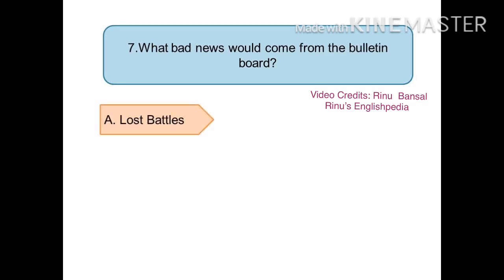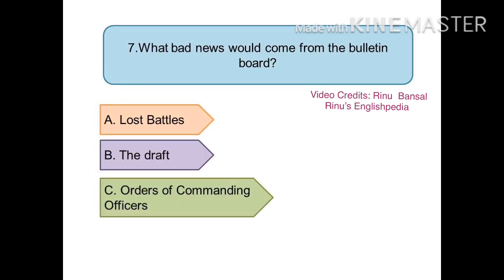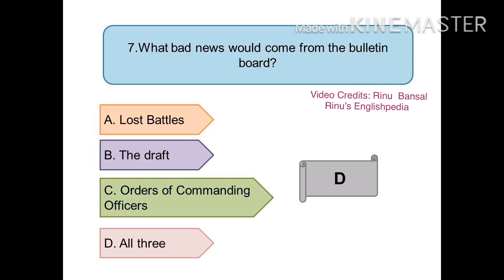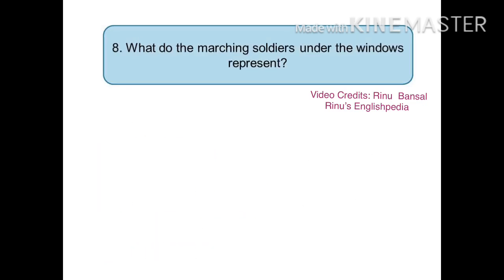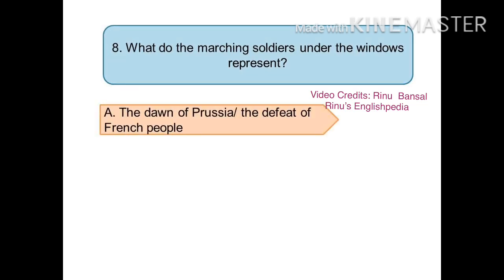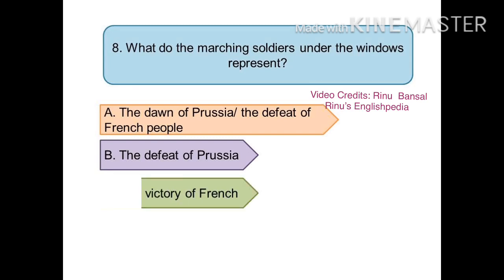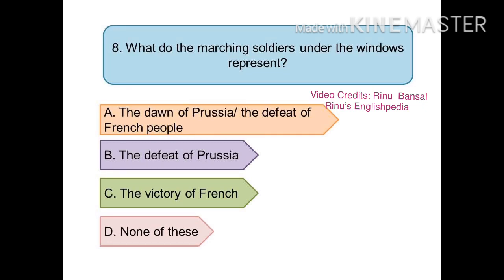The seventh question is: what bad news would come from the bulletin board? The options are (a) lost battles, (b) the draft, (c) orders of commanding officers, or (d) all three. The right answer is (d) all three. The eighth question is: what do the marching soldiers under the windows represent? The options are (a) the dawn of Prussia or the defeat of the French people, (c) the victory of French, or (d) none of these. The right answer is (a) the dawn of Prussia, or the defeat of the French people.